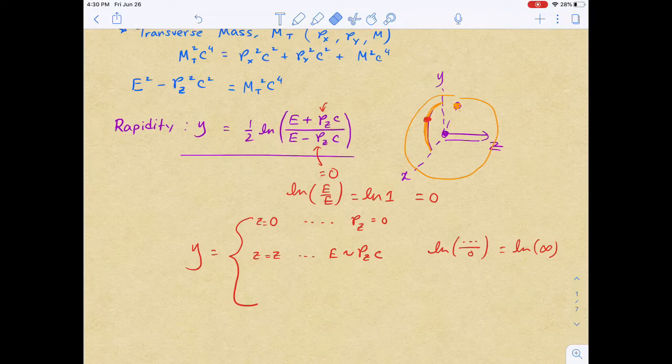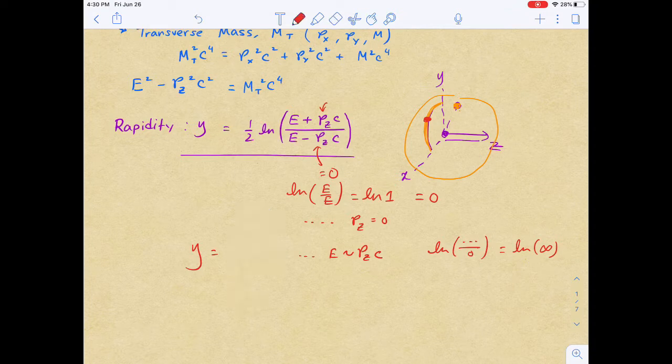Similarly, you can show if the particle is moving in the negative z-axis direction, the bottom term in the rapidity of the natural log, it becomes negative infinity, which gives you a natural log of negative infinity, which is basically negative infinity. So you get a pseudo-rapidity of negative infinity.